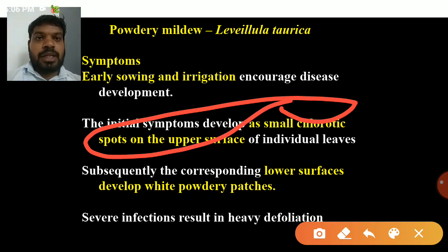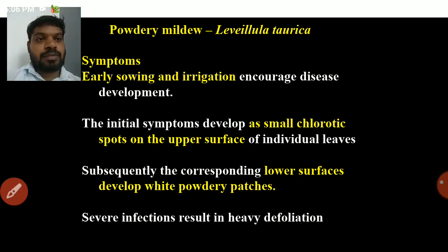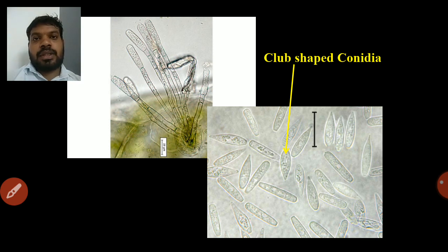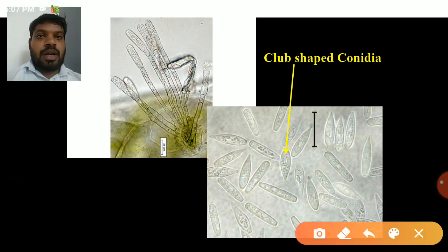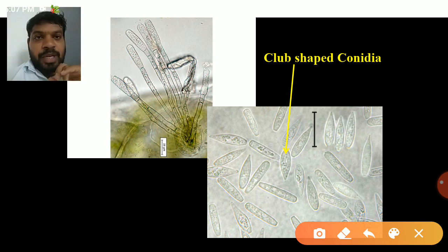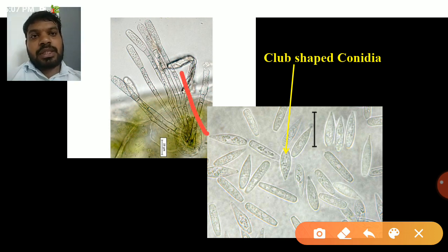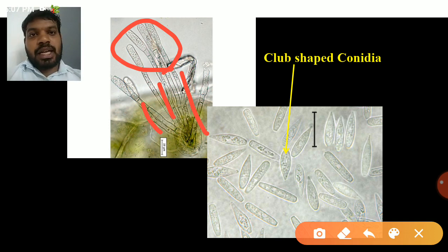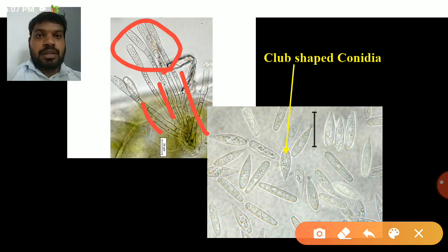Early sowing and irrigation increase the disease development. Severe symptoms lead to defoliation. The pathogen produces IED-obclavate type of conidia — unbranched conidiophores producing single conidia, unlike Erysiphe polygoni which produces chain conidia. Leveillula taurica produces single, club-shaped conidia.